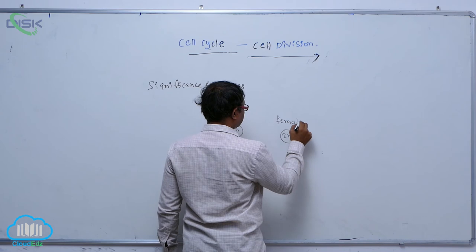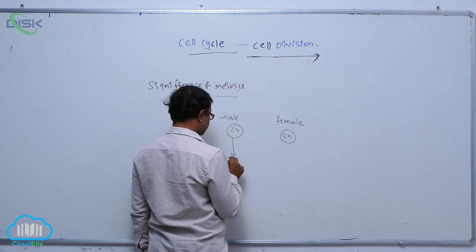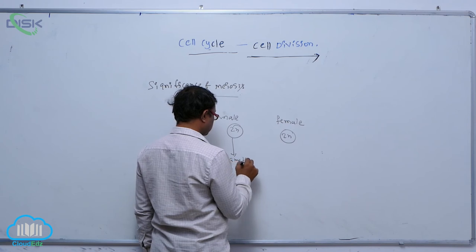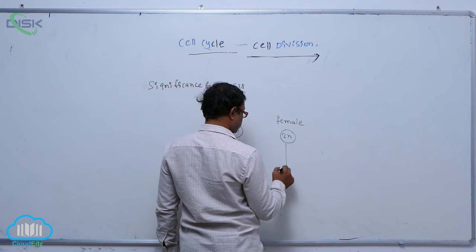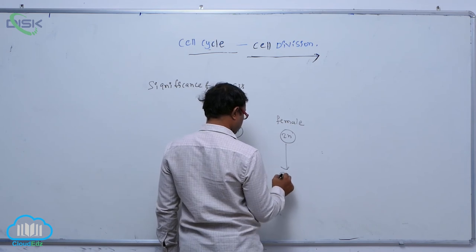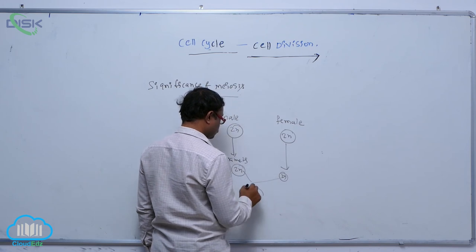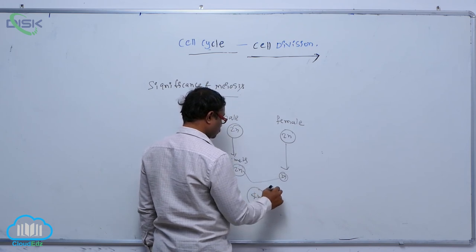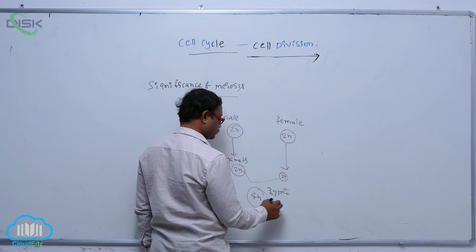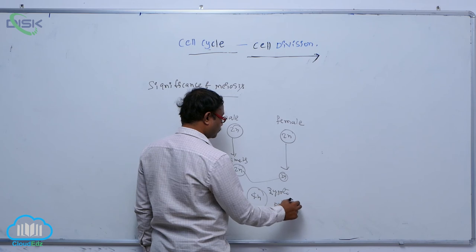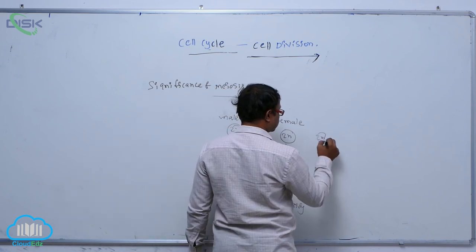Is that female. Without reduction division, they're producing diploid gametes. They're producing diploid gametes. Both are fused to form the zygote. That is known as that foreign condition, it is a polyploidy. For example, it is occurring.